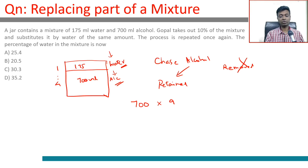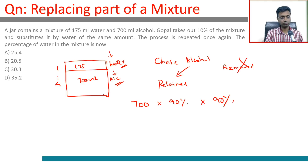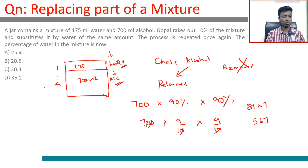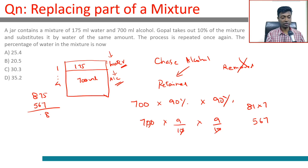When we do this the first time, alcohol remaining is 700 × 90%. Do it once more, we retain 90% again. So the amount of alcohol remaining is 700 × (9/10) × (9/10) = 81 × 7 = 567 ml. The total mixture is 875 ml overall. 875 minus 567 = 308 ml, which is the water remaining.